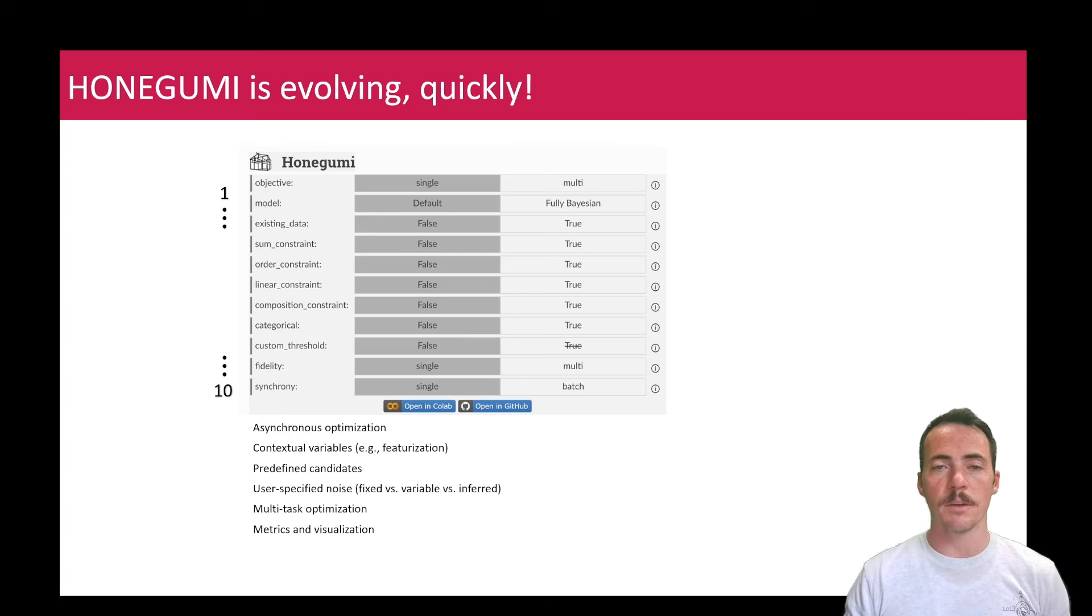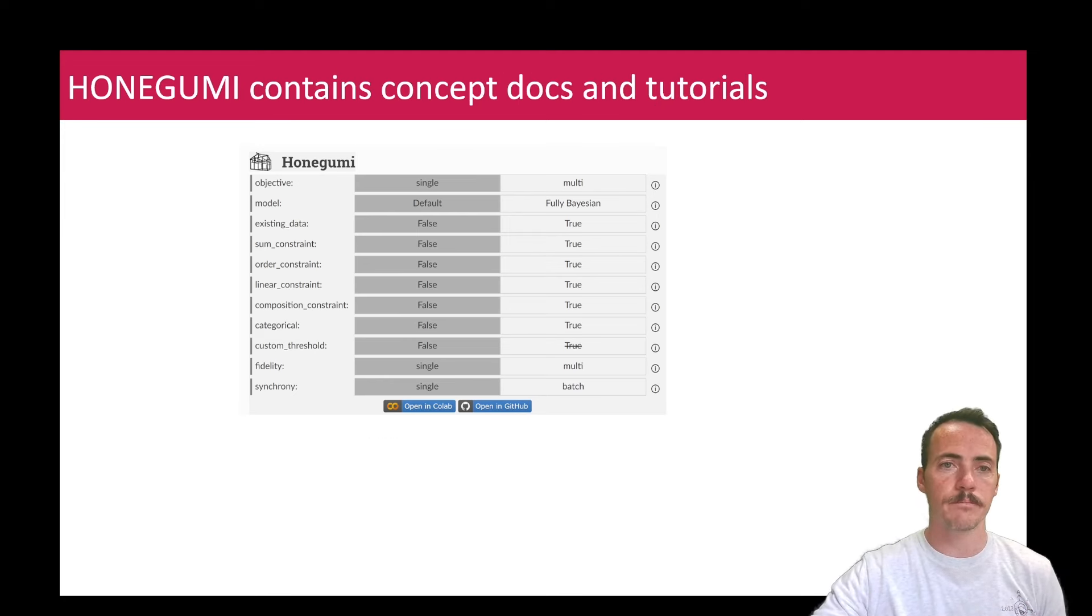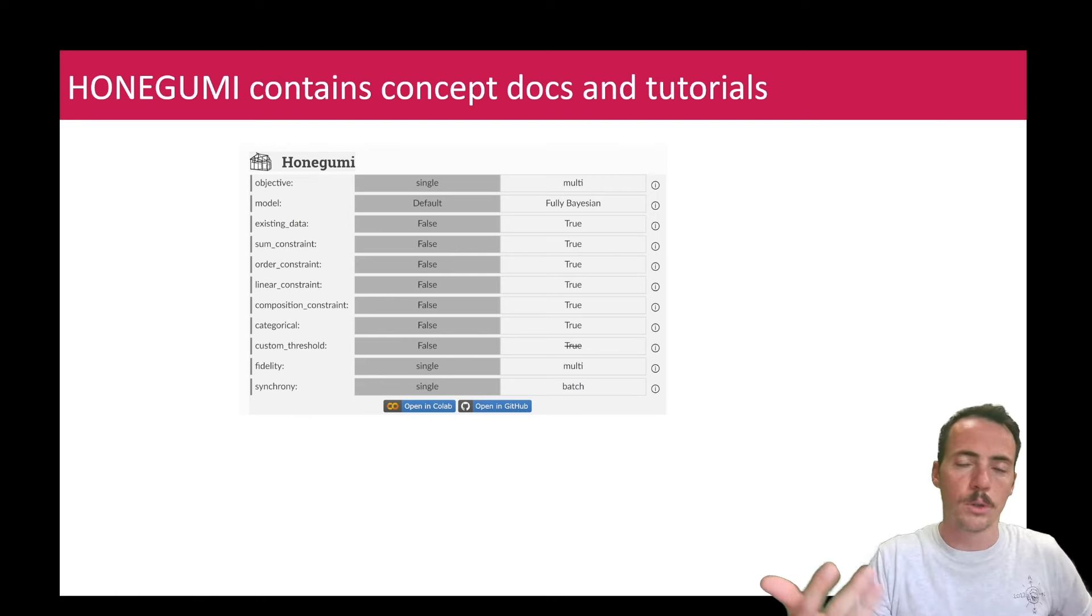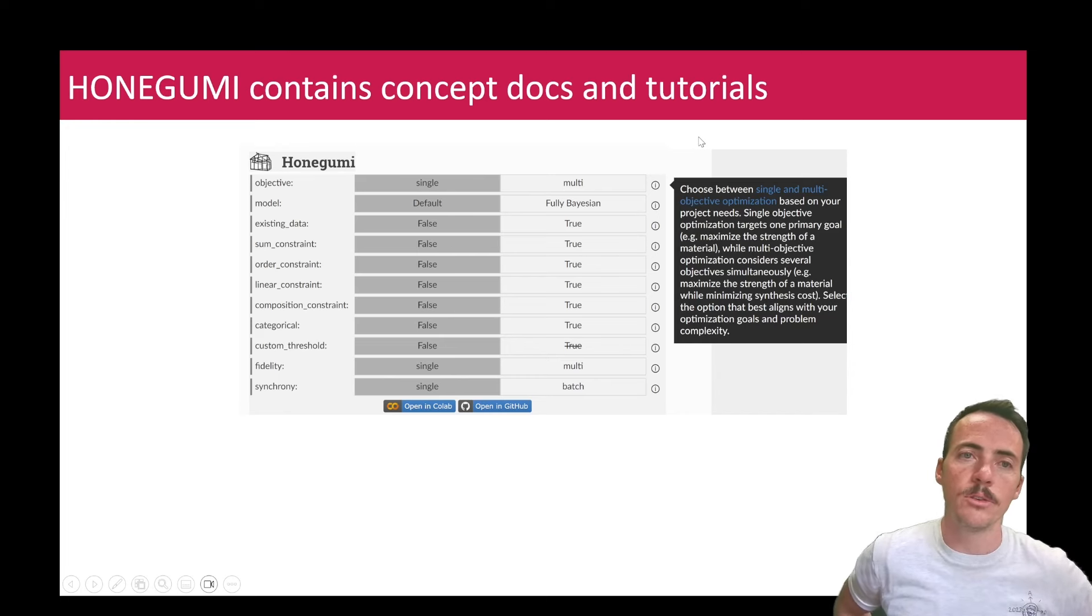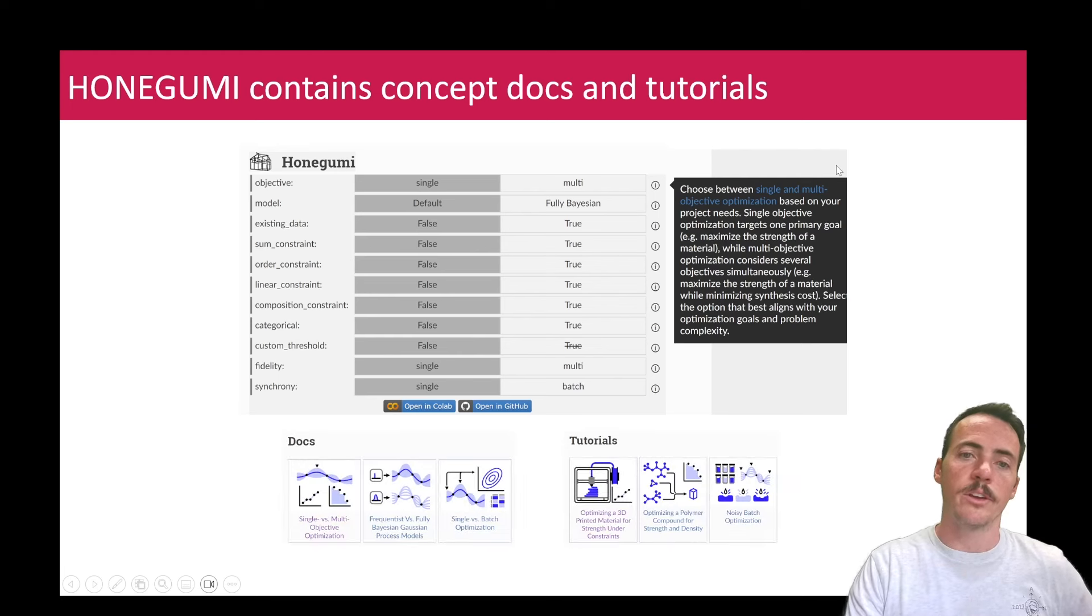We have ideas in mind to add a bunch of other ones you can see over here, like asynchronous optimization or contextual variables or predefined candidates or user specified noise, right? Is this either fixed or variable or inferred or the option to do multitask optimization? And obviously some tools are going to be coming out for metrics and visualization. So we really think that this is going to make it a lot easier for people doing Bayesian optimization by providing these templates, okay? Another cool thing that we've done is that I showed you the link to the concepts, docs, and tutorials, but there's also right here, if you notice on the right-hand side of any of these windows, let's say that you're looking at this the first time and you're like, I don't know what an order constraint is, or I don't know what multi versus single objective is.